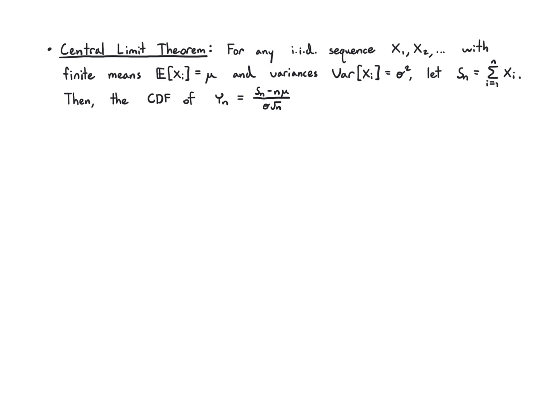Then the CDF of this object, which is the sum minus the mean of the sum, which is n times μ, divided by the standard deviation of the sum, which is σ times √n, that converges to the standard normal CDF for any value of y. So if you look at the limit of the CDF of this thing, it becomes Φ(y), which is the CDF for Gaussian(0,1).